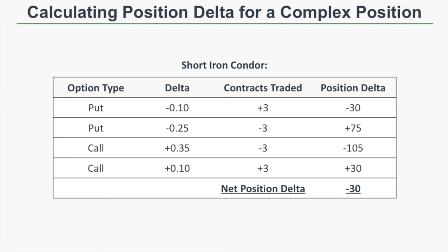Now let's calculate the position delta for a short iron condor, which consists of selling an out-of-the-money call spread and an out-of-the-money put spread at the same time. In this example, we're selling three put spreads and three call spreads. The short puts have an initial delta of negative 0.25, the long puts have an initial delta of negative 0.10, the short calls have an initial delta of 0.35, and the long calls have an initial delta of plus 0.10. The long puts give us a position delta of negative 30, the short puts give us plus 75, the short calls give us negative 105, and the long calls give us plus 30. Adding all of those together, we get a net position delta of negative 30.